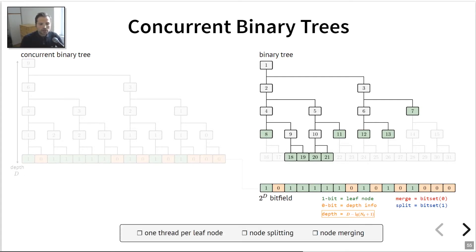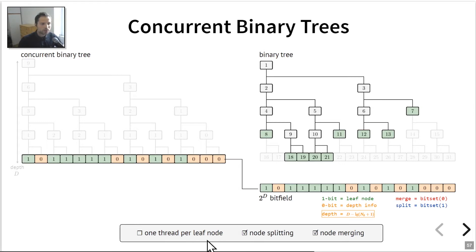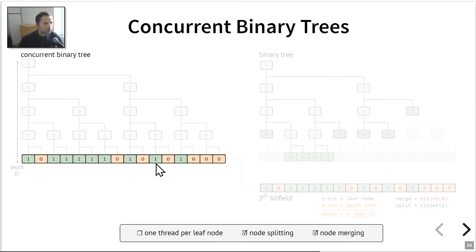This bit field representation is super interesting because it allows us to solve node splitting and merging in parallel. If I have threads processing this bit field, to make it parallel I simply make the bitwise operations atomic. There are hardware instructions on both CPUs and GPUs to do that effectively. This solves the node splitting and merging issue, and now we focus on how to dispatch a thread for each leaf node.